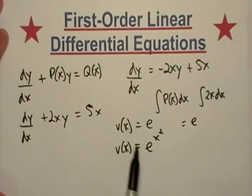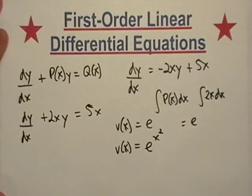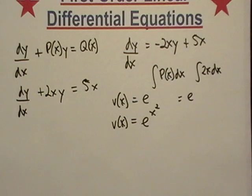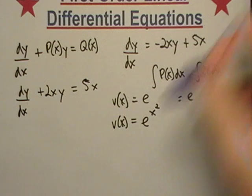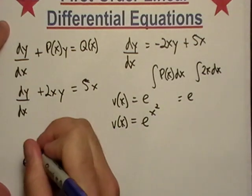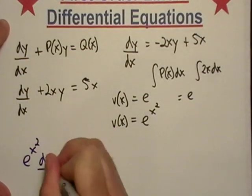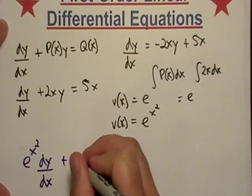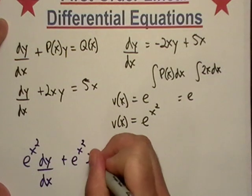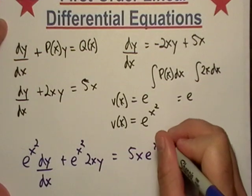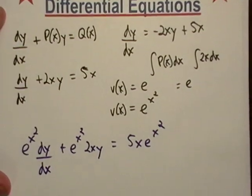Okay? So this right here, this is what we'll be multiplying our differential equation by. So let's see here, why don't I just go ahead and get another color. That one's got a good point on it. Okay? So e raised to the x squared, remember I'm just multiplying it all the way through, plus e to the x squared, 2xy is equal 5x e to the x squared. Okay? So that's all I did.